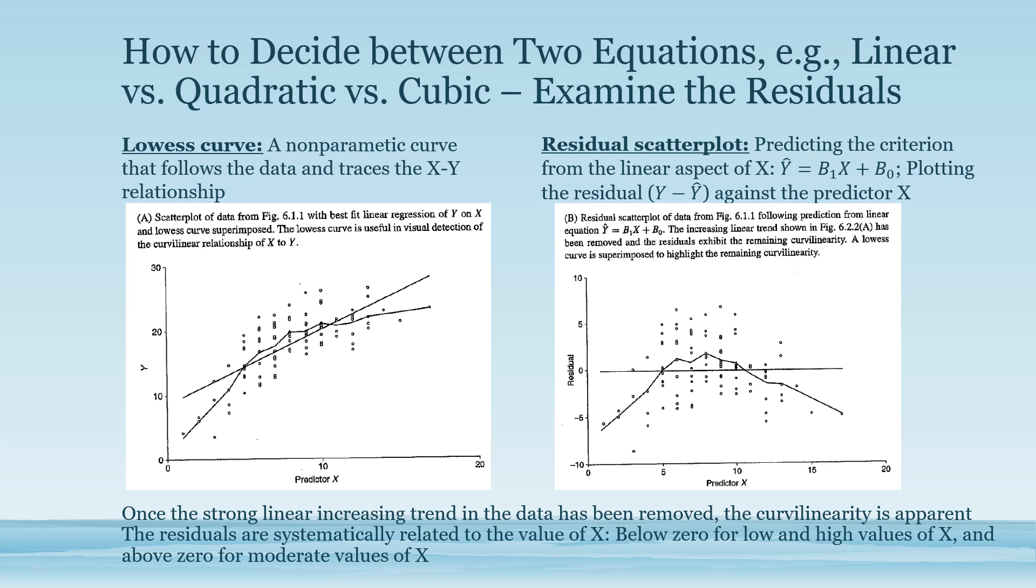In this case, it is quite likely that the correlation between x and y is curvilinear instead of linear. When we remove the linear function between x and y, x is significantly strongly curvilinearly related to the residual of y. So in this case, we should go with the curvilinear relationship.